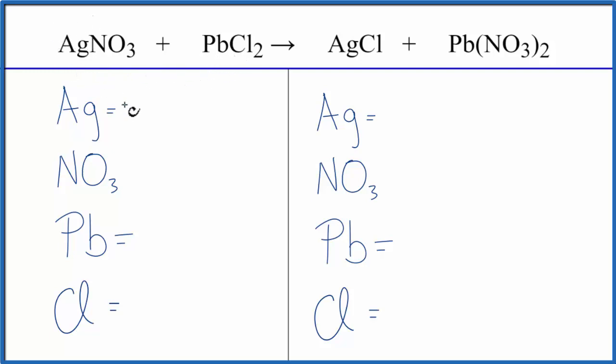Let's count the atoms up. We have one silver, and then this nitrate is called a polyatomic ion. We have a nitrate here and then again on the other side, so we can count this as just one item. So we're going to say we have one NO3, one nitrate, one lead, and two chlorines.